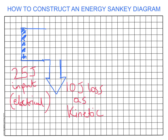Because we've lost 10, we're continuing with 15 joules. So we need to draw the arrow that's now, in terms of thickness, representing 15 joules — that's three squares. Now let's say we lose five joules as sound, because when you turn the hair dryer on, it can be quite noisy. The length of the arrow doesn't matter, but five joules would be one square wide. So we draw an arrowhead and say this is a five joule loss as sound.